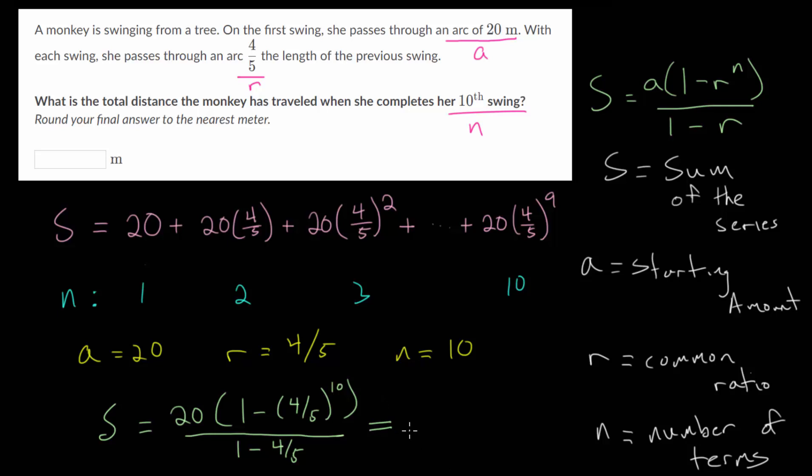we would get 89.2625, and we don't really need the rest of the decimals. So really it's approximately this, and that's in meters. But we need to round to the nearest meter, so this is approximately 89 meters.